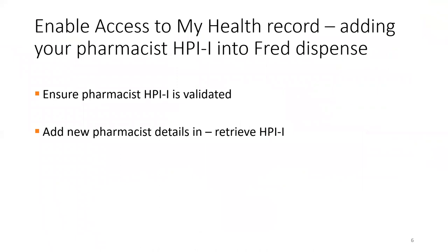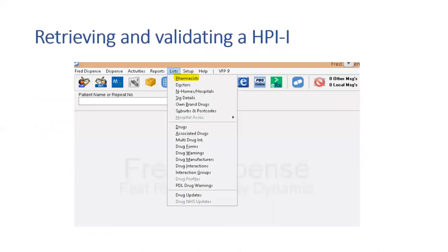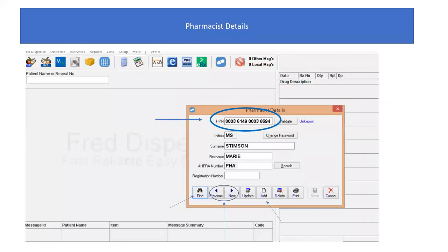We will start with how to enable access to a My Health record by adding your pharmacist HPII into FRED Dispense. Before you can access a patient's record and upload dispense scripts into a patient's My Health record, you need to ensure that your pharmacist HPII is added and validated within FRED Dispense. In FRED, from the list menu select pharmacist. The pharmacist details window will appear. Find your pharmacist details by navigating previous or next on the pharmacist details window to look up your record.